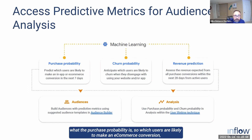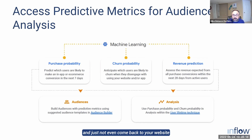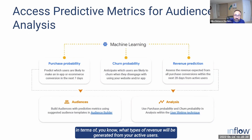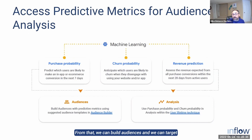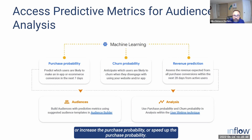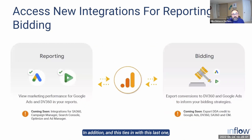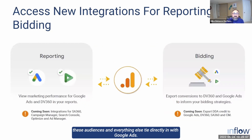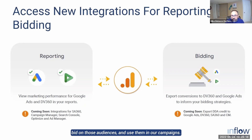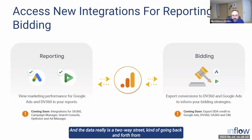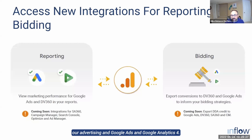GA4 also offers predictive metrics for audiences and analysis. Once it has enough data, GA4 will predict purchase probability — which users are likely to make an e-commerce conversion in the next seven days, which users are likely to disengage, and even revenue predictions from active users. From that, we can build audiences and target them with advertising to reduce churn or increase purchase probability. These audiences tie directly into Google Ads, creating a two-way data flow between Google Ads and Google Analytics 4.